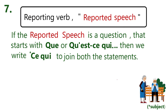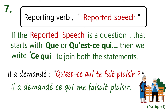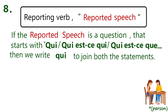Rule number seven: if the reported speech is a question that starts with 'que' or 'qu'est-ce que,' we write 'ce que' to join both the statements. For example, 'il lui a demandé qu'est-ce que tu as fait plaisir' — after writing it in indirect speech it will be 'il lui a demandé ce que ça m'a fait plaisir.' So 'qu'est-ce que' is replaced with 'ce que.'